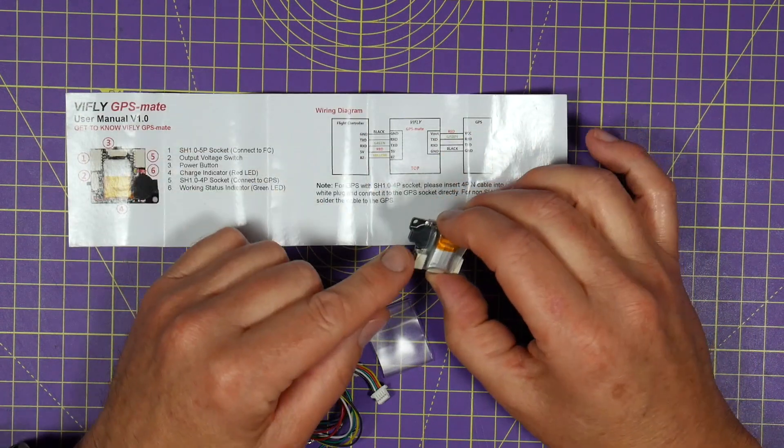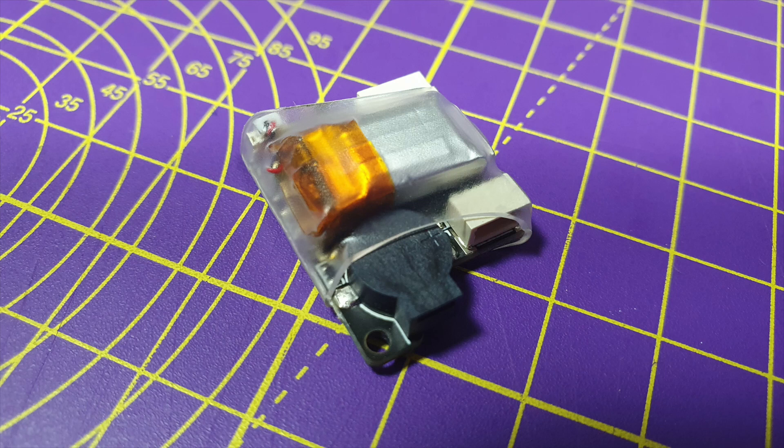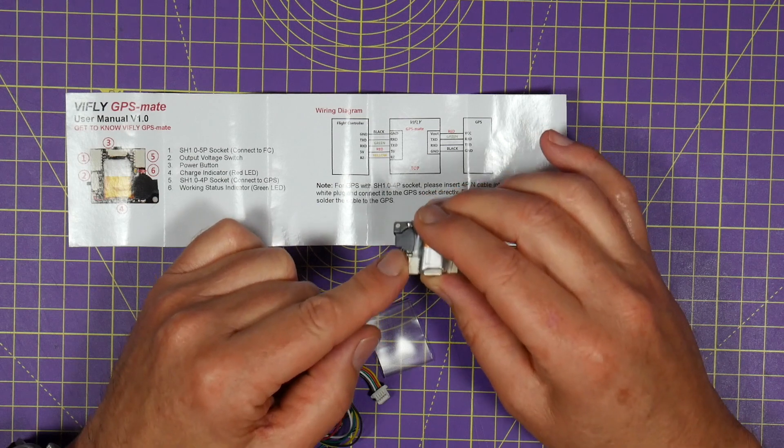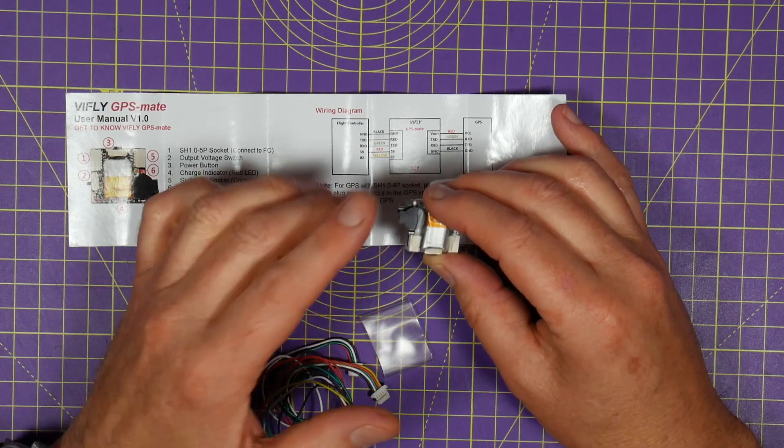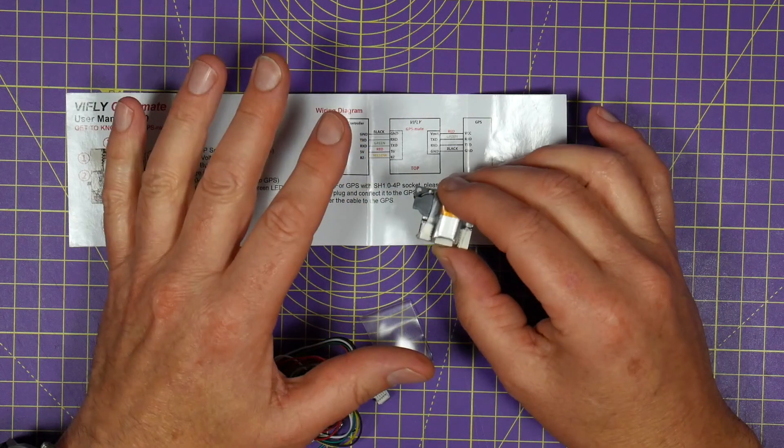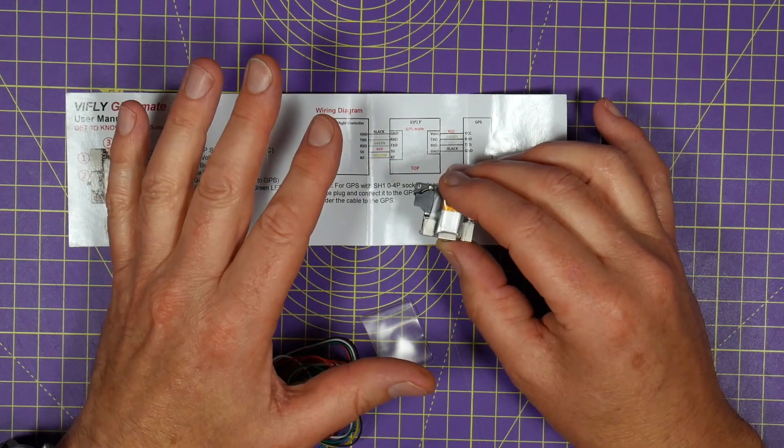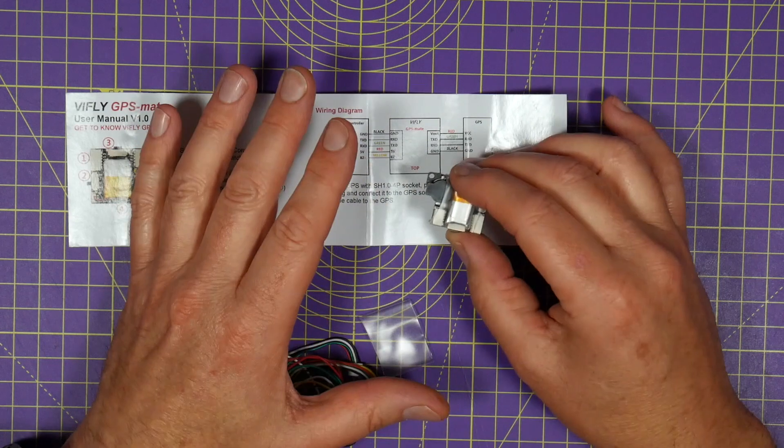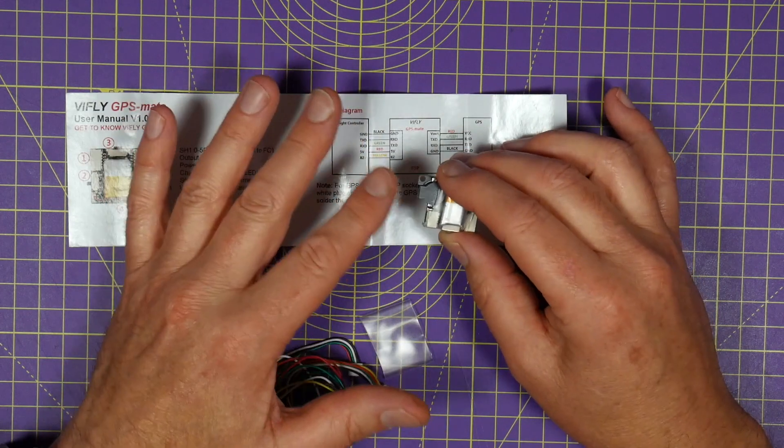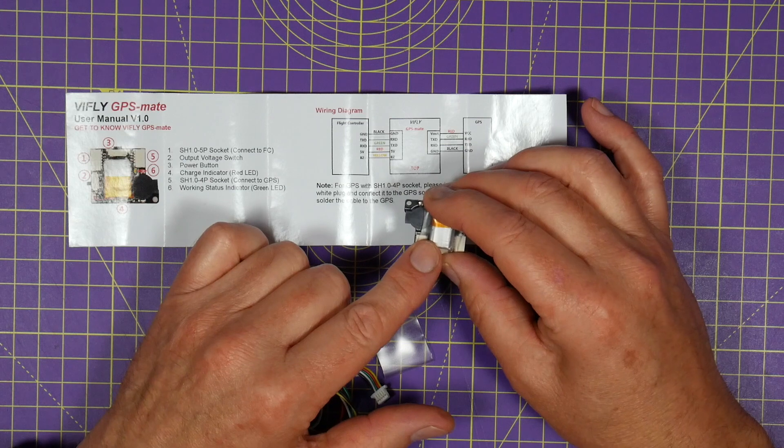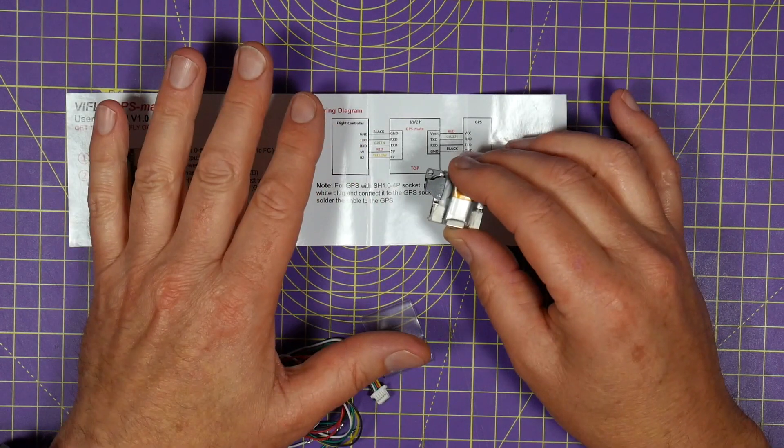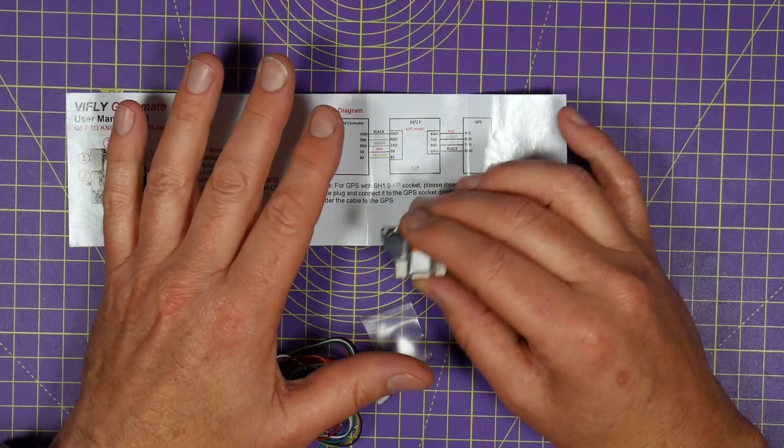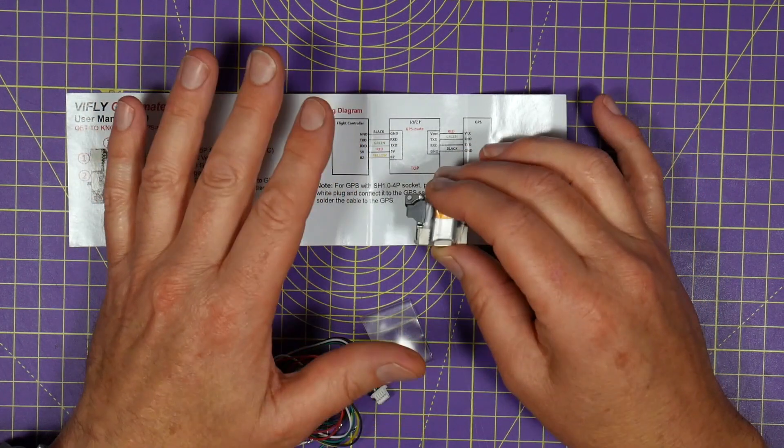And there's more. The eagle eyed amongst you may have spotted there's a buzzer down here. They've included the ViFly Finder 2 lost drone buzzer functionality in this as well. And the ViFly Finder 2 is the only drone finder I use these days because it works 100% of the time. It works as a standalone buzzer and because it's got its own internal battery like it has on here, it buzzes away even if the main flight battery is ejected or is totally dead.